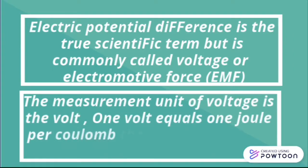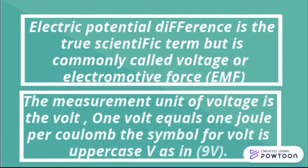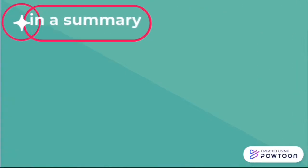The measurement unit of voltage is the volt. 1 volt equals 1 joule per coulomb. The symbol for volt is uppercase V, as in 9 volts.